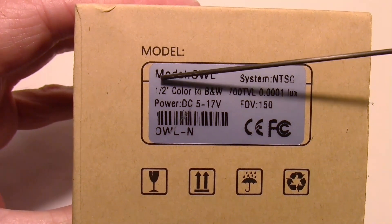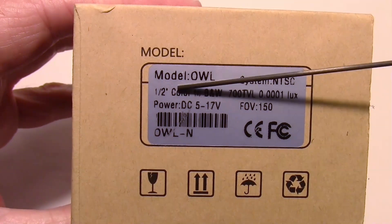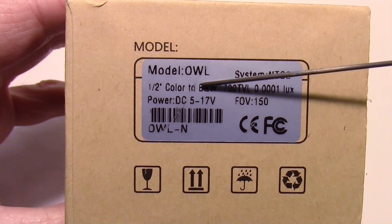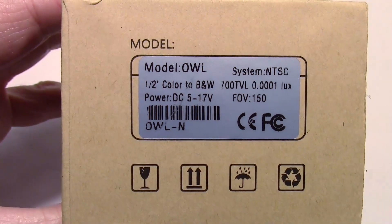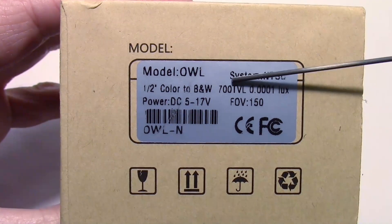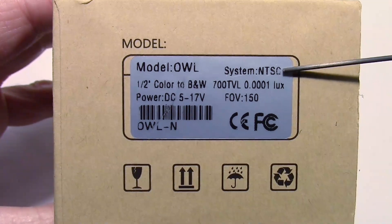It's a half-inch color to black and white CCD camera. If you have enough light it'll be in color, if you're in low light it'll switch to black and white automatically, and there's no menus to adjust any of that.